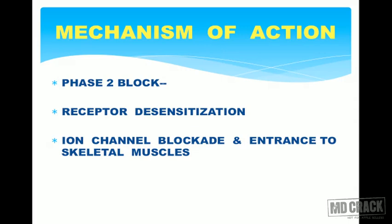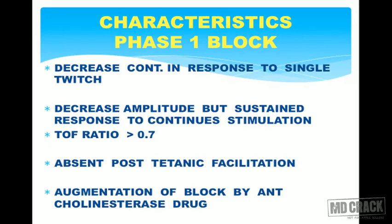Phase 2 block is the second type of block caused by succinylcholine. When receptors become desensitized, succinylcholine again binds to the same receptors, causing ion channel blockade and entrance into the skeletal muscles.